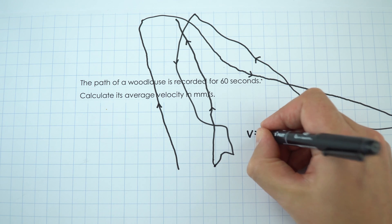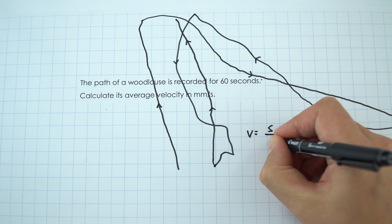Now to work out the velocity of something is going to be equal to its displacement divided by the time.